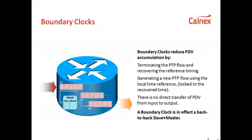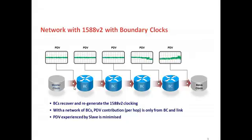So what can be done to address the problem of packet delay variation? The standards bodies have defined two types of devices which help alleviate it. The first is a boundary clock. A boundary clock is effectively a back-to-back slave and master — it terminates the 1588 packet flow, recovers the timing, and then timestamps and acts as a master for the next node. In a network of boundary clocks, each boundary clock recovers and regenerates the time, so the contribution of packet delay variation is simply from one node and one link — much less than the accumulated PDV of multiple nodes. Boundary clocks therefore reduce PDV, and less PDV and less asymmetry makes it easier for the slave to recover a more accurate clock.